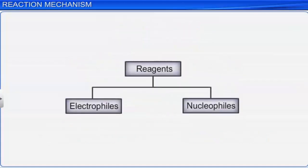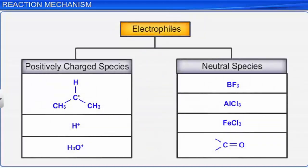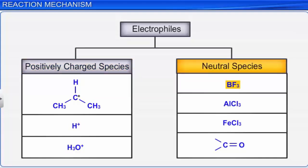Polar organic reactions are caused by two types of reagents: electrophiles and nucleophiles. An electrophile is an electron-seeking or electron-loving species as it is electron-deficient. Electrophiles may be either positively charged, such as carbocations, hydrogen ion, and hydronium ion, or electrically neutral species such as boron trifluoride, aluminum chloride, ferric chloride, and the carbonyl group.